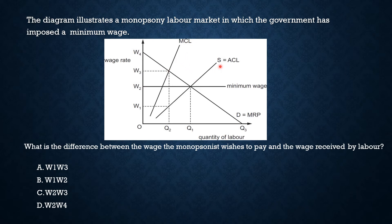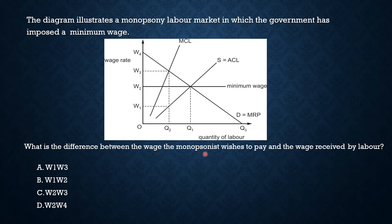Because of the monopsony labor market, the additional cost of employing extra labor is very high, so the supply and marginal cost curves are different. Marginal cost equals marginal revenue product at one point, but the monopsonist charges only wage rate W1 — below the equilibrium rate — because they have buying power as a single buyer. With a government minimum wage imposed, workers now receive wage rate W2.